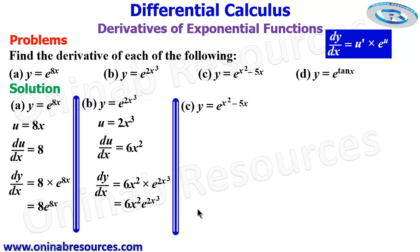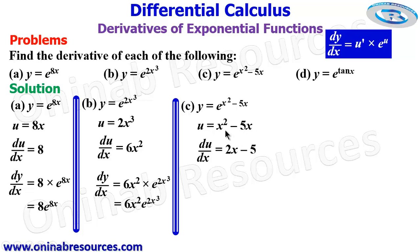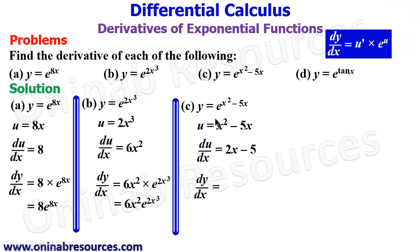We then go to problem c. Again, our u will be the entire exponent, which is x squared minus 5x. We find du/dx, which is u prime, equal to 2x minus 5. The derivative of x squared gives 2x by reducing the power by 1, and the derivative of 5x gives just 5.